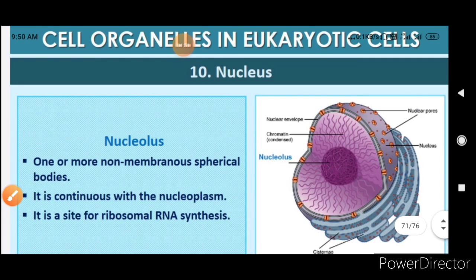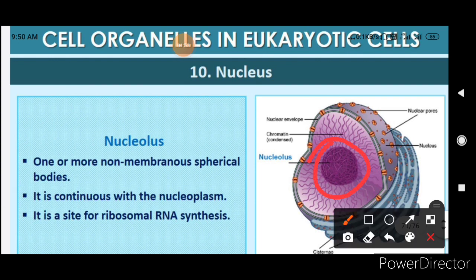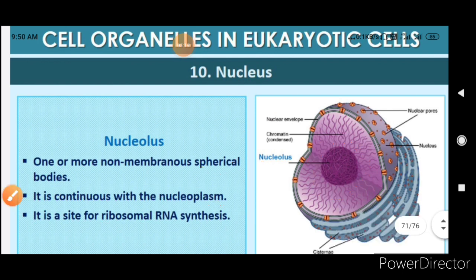Inside the nucleus there is a nucleolus. The nucleolus consists of one or more non-membranous spherical bodies, continuous with the nucleoplasm. It is the site for ribosomal RNA synthesis. This is an important exam point: the nucleolus is the site for ribosomal RNA synthesis.